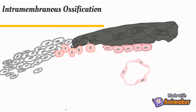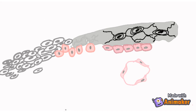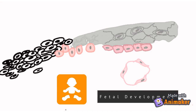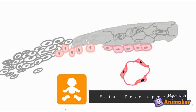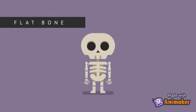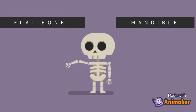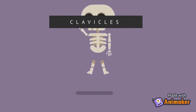Intramembranous ossification is the development of bone from fibrous membrane during fetal development. It is involved in the formation of the flat bones of the skull, the mandible, and the clavicle.